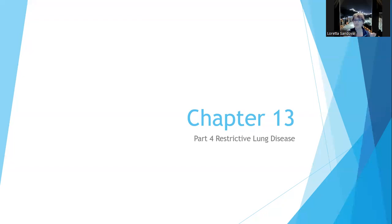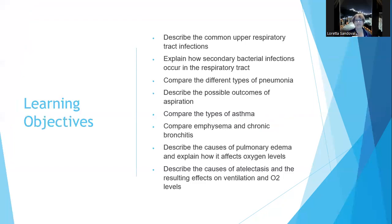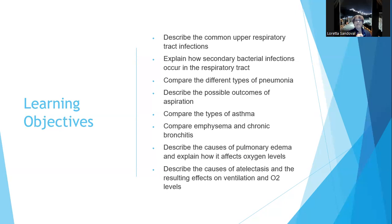This will hopefully be short — the last two learning objectives. Upper respiratory infections were covered in infective lung disease, bacterial infection the same. Pneumonia is infective, or obstructive for aspiration pneumonia, since aspiration can block everything and make it difficult to breathe. We talked about asthma in the obstructive category, and emphysema and chronic bronchitis. Now we're going to talk about restrictive lung disease — the causes of pulmonary edema and how it affects oxygen levels.